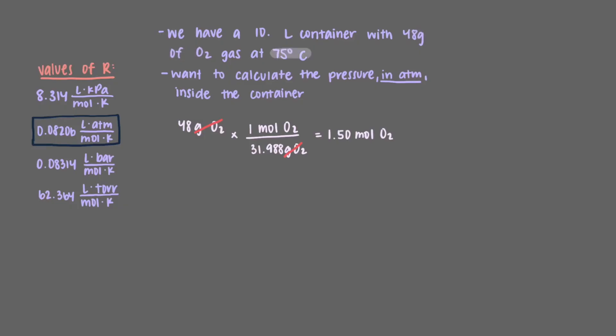Similarly, we are given the temperature in degrees Celsius, but we must use kelvin in these calculations. We'll add 273.15 to 75 degrees Celsius to get 348.15 kelvin.